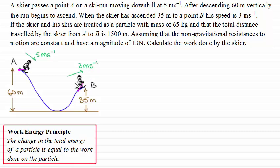and the total distance travelled by the skier is 1500 meters, then assuming that the non-gravitational resistances to motion are constant and have a magnitude of 13 newtons, we're asked to calculate the work done by the skier.